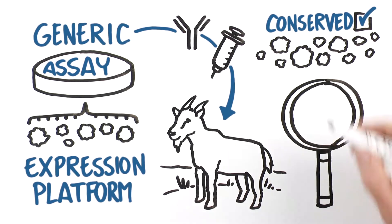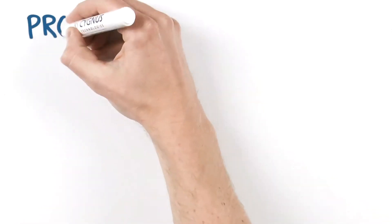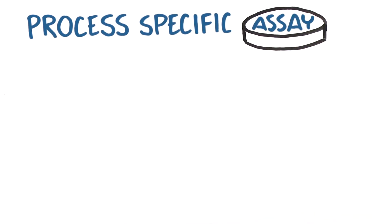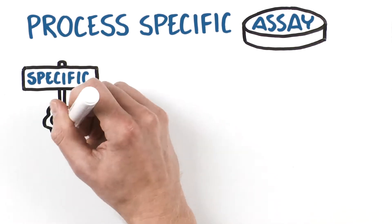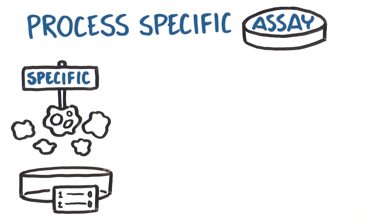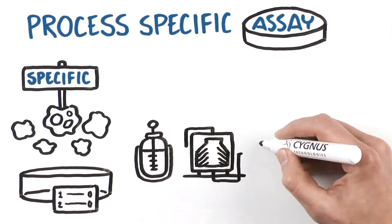On the other hand, a process-specific assay is designed for a specific strain of host cells using a specific cell culture process. They're usually used for drug production in later stage projects with a locked process.